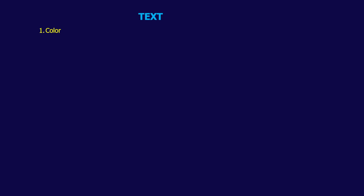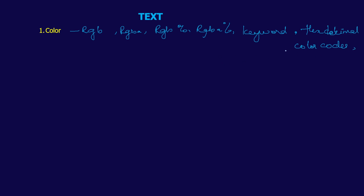Next we have text properties. What are text properties? There are certain properties which are going to be added. For example, color — you can add the text color using RGB, RGBA, absolute value, RGB or RGBA value in percentage, keywords — that particular video will be linked in the card and description — and hexadecimal color codes, including shorthand hexadecimal color codes.